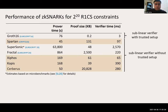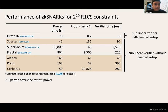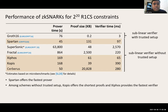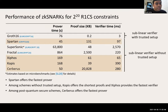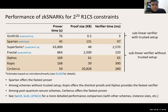For performance: Spartan offers the fastest prover among all measured schemes. Among schemes without trusted setup, COPIS offers the shortest proofs and Kyphos provides the fastest verifier. Among post-quantum secure schemes — including Cerebrus and Fractal — Cerebrus offers the fastest prover. There are detailed performance comparisons with other schemes and instances in the papers linked from the beginning of the presentation.